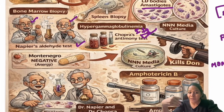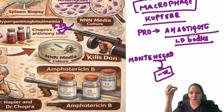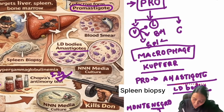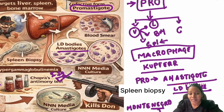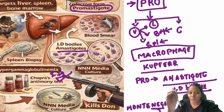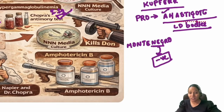To demonstrate the LD body, you need a tissue sample. The organism resides in the liver, spleen, and bone marrow. Liver biopsy is avoided because it is very vascular and carries bleeding risk. The most commonly used test is bone marrow biopsy, where you demonstrate the amastigote form, or LD body.